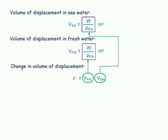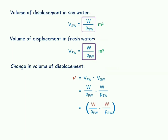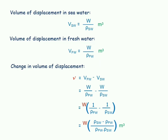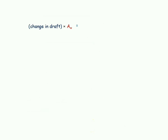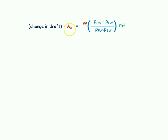Since W is common in both terms, we factor it out and simplify to get: added volume = W × (ρ_SW − ρ_FW) / (ρ_SW × ρ_FW). We also know from earlier that the added volume equals δd × Aw. Equating these two expressions: δd × Aw = W × (ρ_SW − ρ_FW) / (ρ_SW × ρ_FW). To find the change in draft, we move Aw to the denominator.